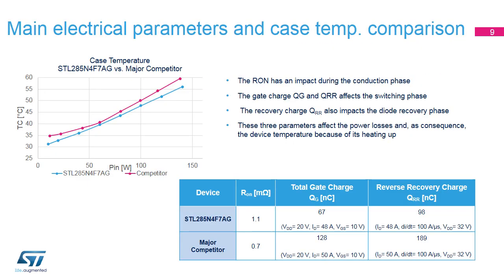The maximum switching power consumption at device turn-on and turn-off are evaluated. The table shows the three most important parameters that have an impact on the power losses and, as a consequence, on the device's temperature as a result of its heating up: the on-state resistance R-on, which has an impact during the conduction phase; the gate charge QG, during the switching; and the reverse recovery charge QRR, during the diode recovery phase. The figure on the right shows a comparison between the STL285N4F7AG MOSFET and a competitor's device.